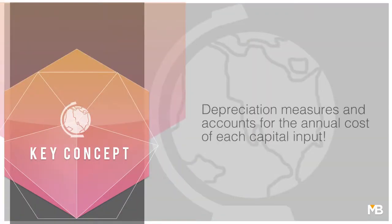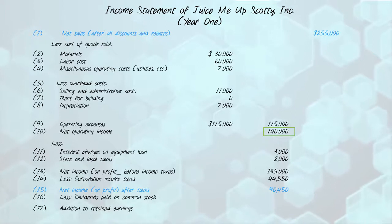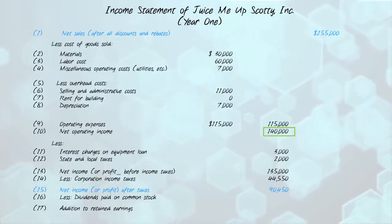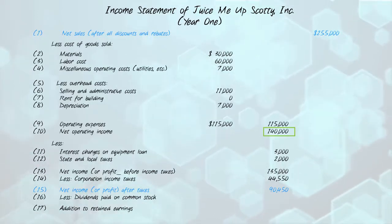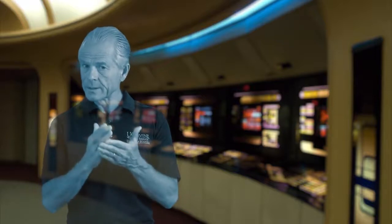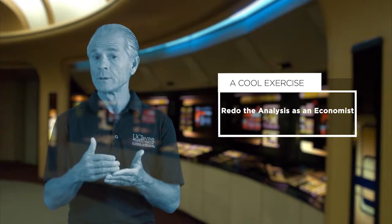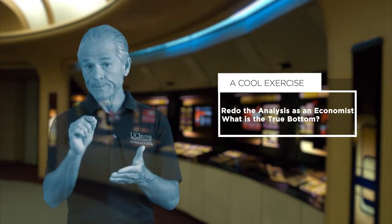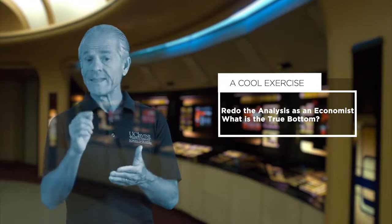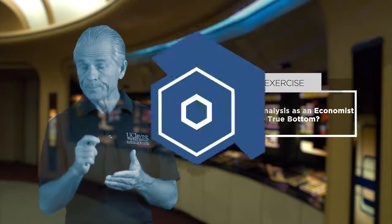Take a look at this income statement that your accountant has prepared for your business after a year of operation. Items two, three, and four represent your cost of goods sold, which are basically your variable costs. These total ninety-seven thousand dollars and include employee compensation, operating costs such as utilities, and materials like the four hundred pounds of carrots and one thousand bushels of oranges that you've juiced.